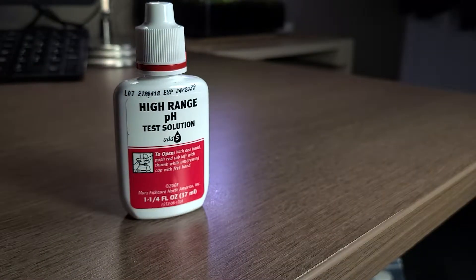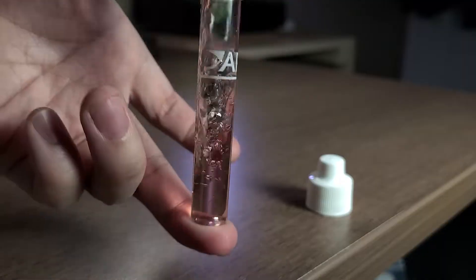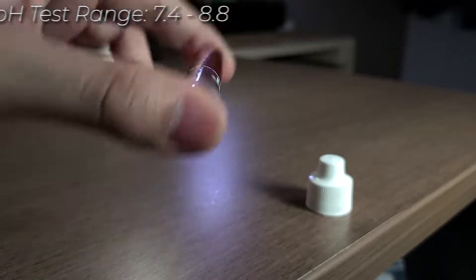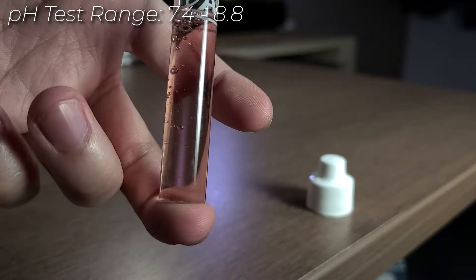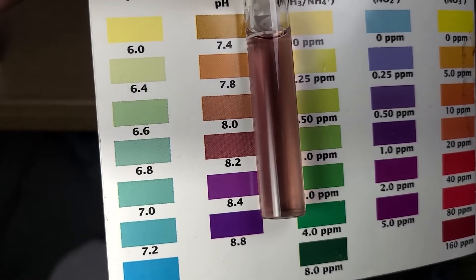High range pH is the same as pH. You add three drops, shake the tube, and the results are immediate, except this measures pH from 7.4 up to 8.8. This water has a pH of 8.2.